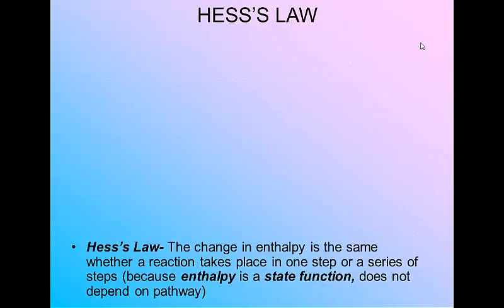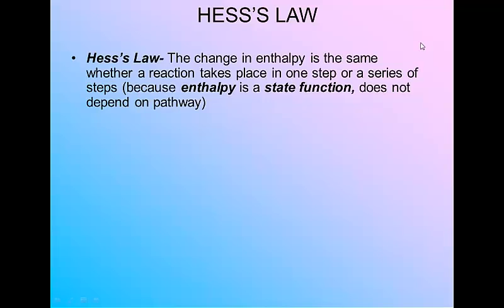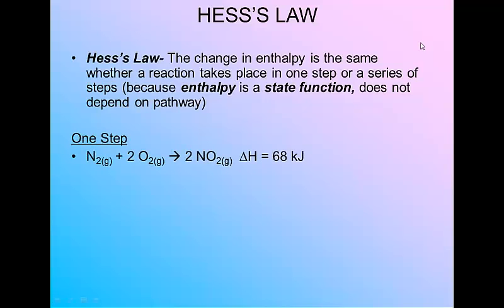Hess's law: the change in enthalpy, or delta H, will be the same whether your reaction takes place in one step, two steps, three steps, or more — it doesn't matter. You sum up the steps and get the exact same answer. Enthalpy is a state function, and Hess's law proves it does not depend on pathway. For example, the synthesis of nitrogen dioxide in one step has an enthalpy change of 68 kilojoules absorbed by the reactants in order to break those bonds and rearrange them. The breaking of the reactant bonds requires more energy than the making of the product bonds, and that energy must come from an outside source such as electricity, fire, or ignition.